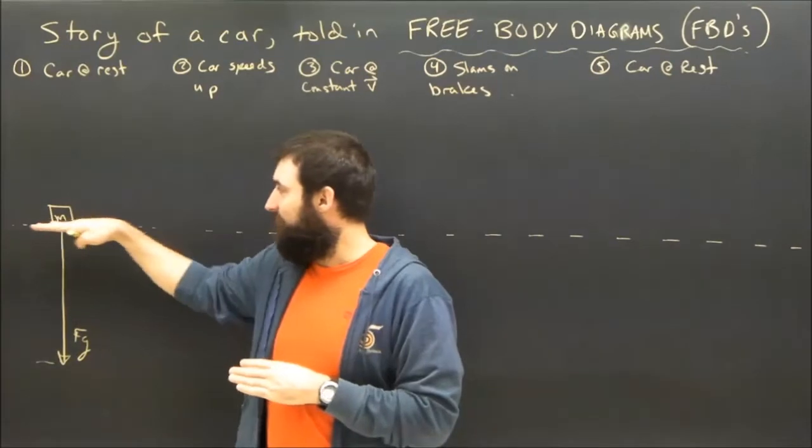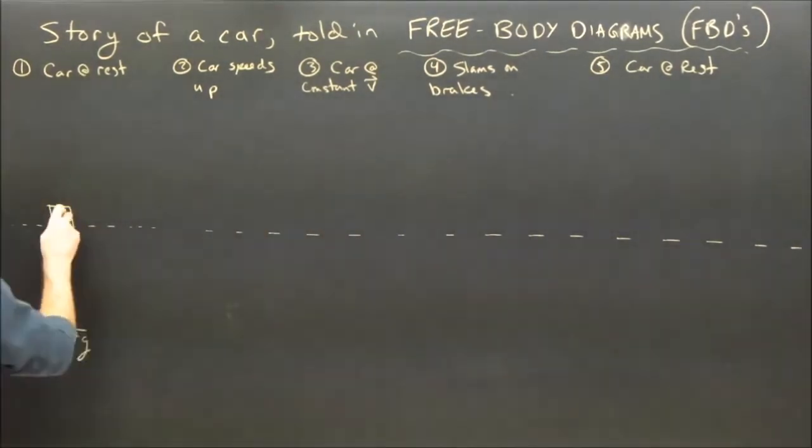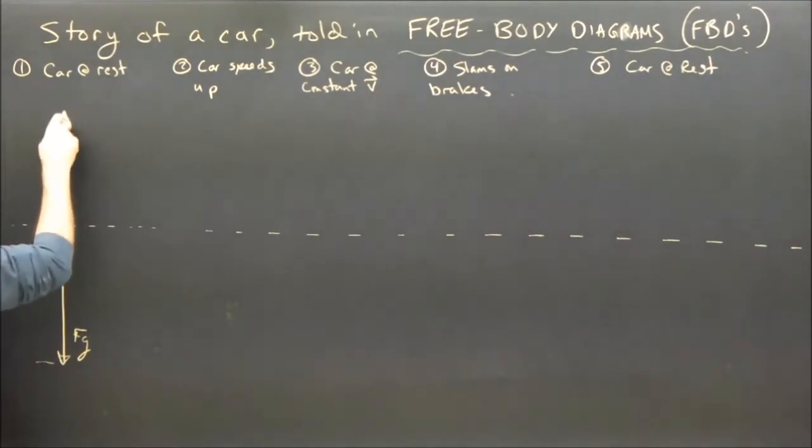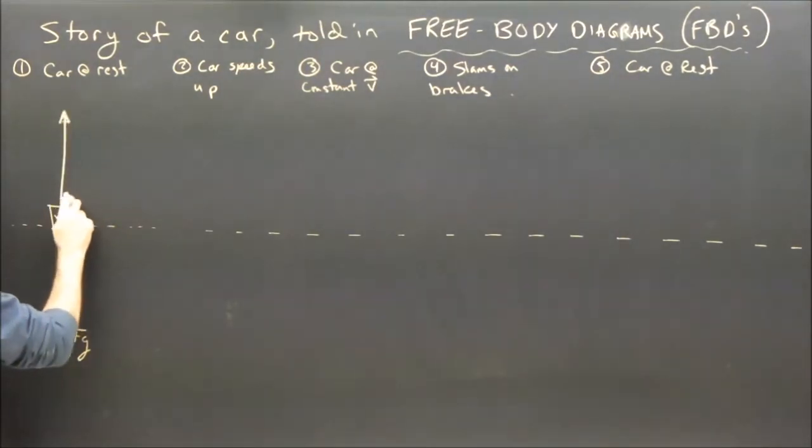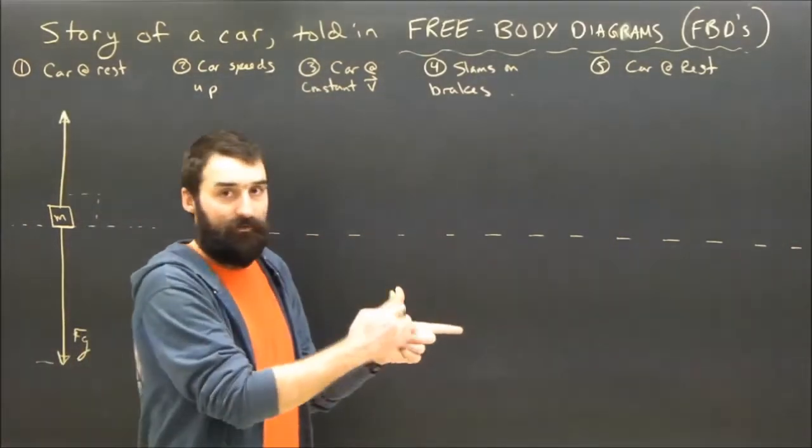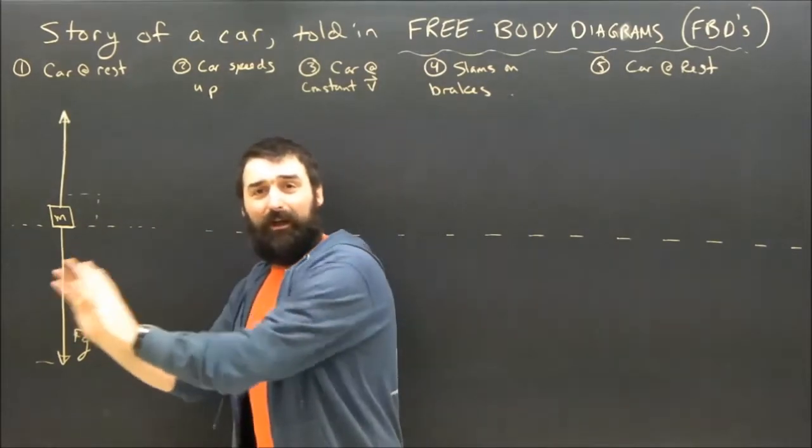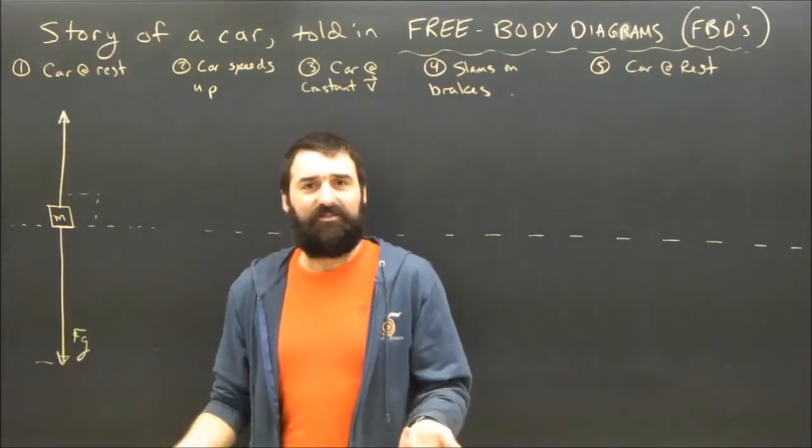What other forces are there on the car? The car is resting on a surface, that's why I've drawn the dotted line. The car is on the ground, so that means there's going to be a normal force. And the normal force is going to be up, perpendicular to the surface, 90 degrees to the surface. It's always 90 degrees, that's normal, that's why it's called the normal force. Any other forces? Is there applied force? Is anyone pushing on the car? It's just sitting there.